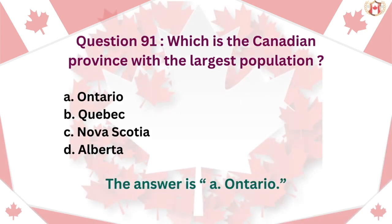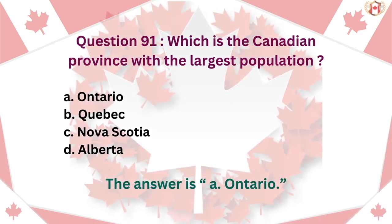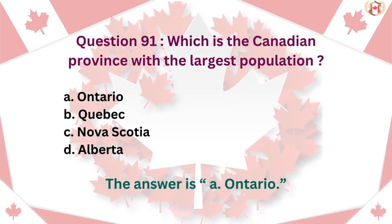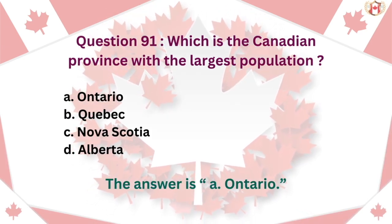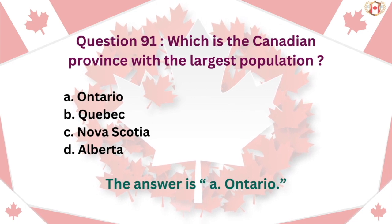Question 91: Which is the Canadian province with the largest population? A. Ontario, B. Quebec, C. Nova Scotia, D. Alberta. The answer is A. Ontario.